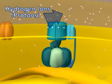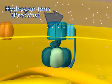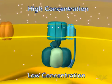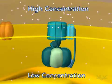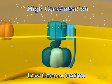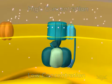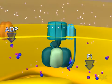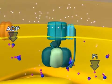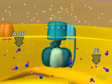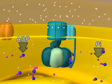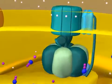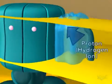Notice the large difference in the number of hydrogen ions on the two sides of the membrane. This difference is a hydrogen ion, or proton, concentration gradient. The energy associated with this gradient is used to synthesize ATP from ADP and Pi. This occurs at the ATP synthase complex.